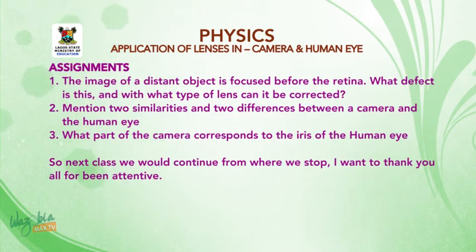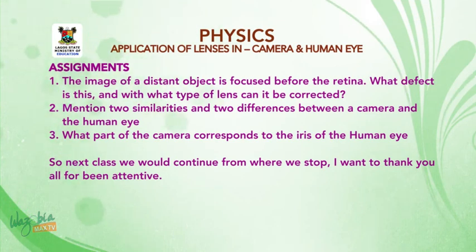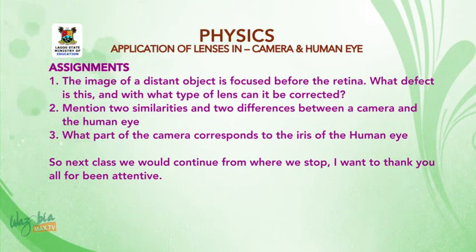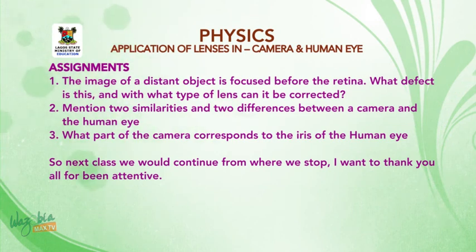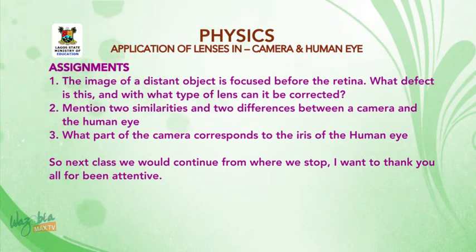Take the following as your assignment. Number 1: The image of a distant object is focused before the retina — what defect is this, and with what type of lens can it be corrected? Number 2: Mention two similarities and two differences between a camera and the human eye. Number 3: What part of a camera corresponds to the iris of the human eye? Next class, we will continue from where we stopped. Thank you all for being attentive.